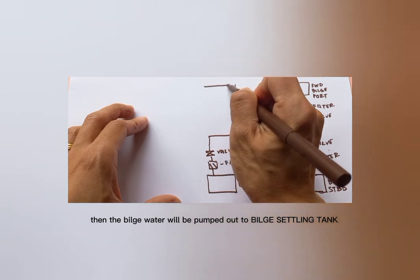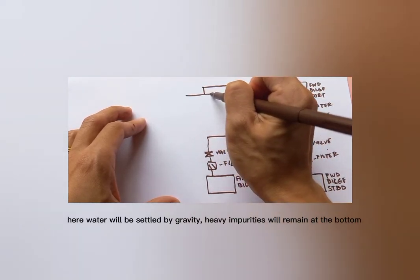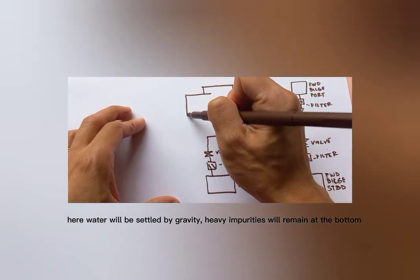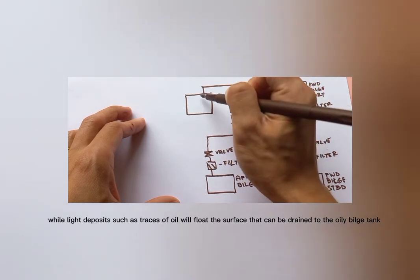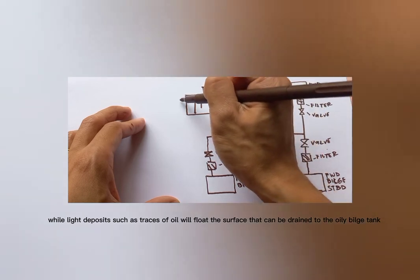Here water will be settled by gravity. Heavy impurities will remain at the bottom while light deposits such as traces of oil will float the surface, that can be drained to the oily bulge tank.